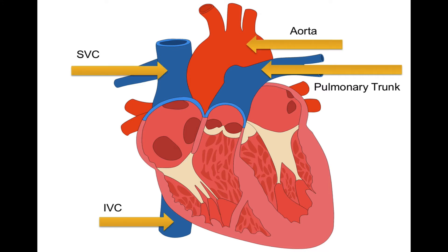So collectively we have the superior vena cava (SVC), inferior vena cava (IVC), aorta, and pulmonary trunk. In a later video I'll talk about blood flow through the heart — how blood returns via the veins to the right heart, to the lungs, back to the left heart, and to the whole rest of the body. But today we focused on these vessels labeled with the yellow arrows.